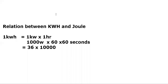Solving this: 1000 × 3600 = 3,600,000, which can be written as 3.6 × 10⁶ Joules. So the relation is: 1 kWh = 3.6 × 10⁶ Joules. This formula is used to convert electric energy from kilowatt-hours to Joules or vice versa. To convert from kWh to Joules, multiply by 3.6 × 10⁶.